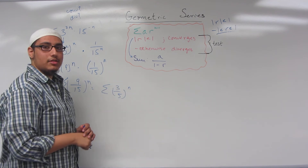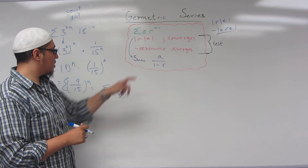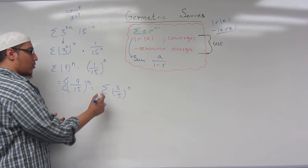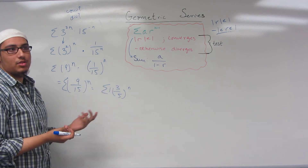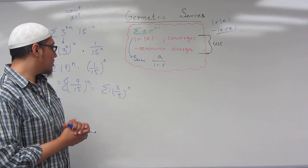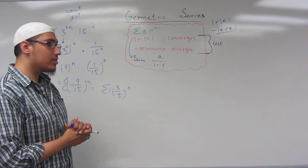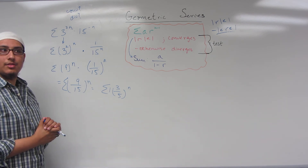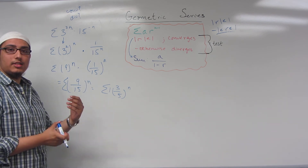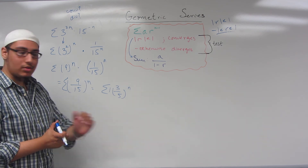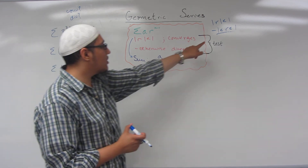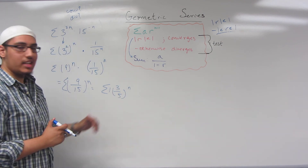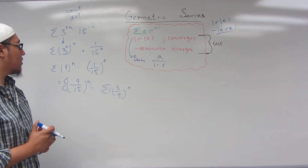This becomes sigma 3 fifths to the n. We have R to the n, so this is geometric, and A is simply 1. Is this series convergent or divergent? Well, 3 fifths is less than 1 but greater than negative 1 — it falls in the interval. Therefore, this is a convergent geometric series.